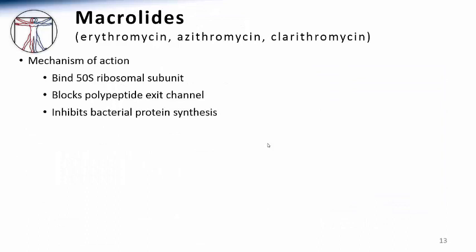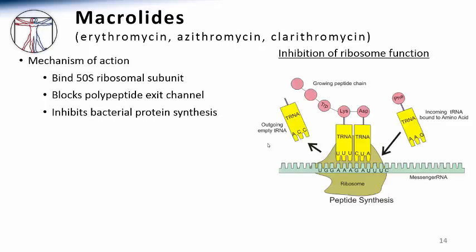Before discussing specific recommendations for the treatment of community-acquired pneumonia, I would first like to introduce three classes of antibiotics that are often used in the treatment of various pneumonia syndromes. The macrolide class of antibiotics includes drugs such as erythromycin, as well as two newer agents, azithromycin and clarithromycin. The macrolide antibiotics work by inhibiting bacterial protein synthesis. These drugs bind to the 50S ribosomal subunits in bacteria at the site where proteins are being produced. By blocking the exit channel of the growing polypeptide chains, macrolides result in the death of a susceptible bacterial cell.